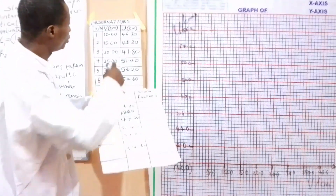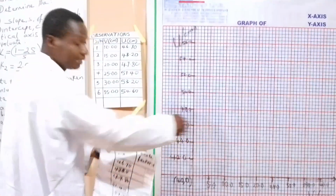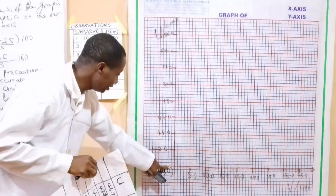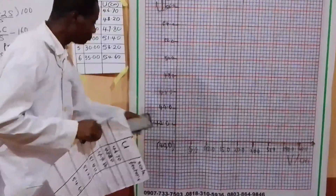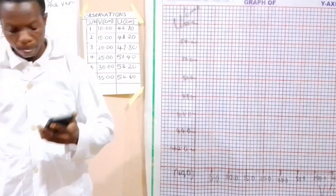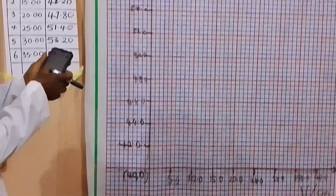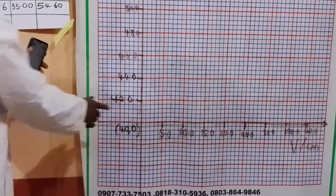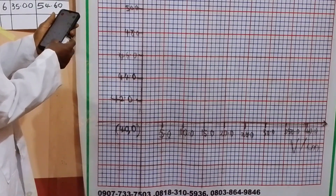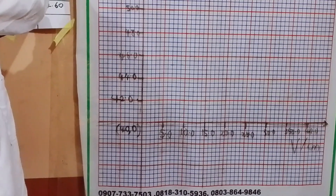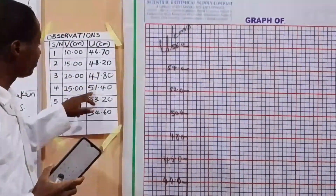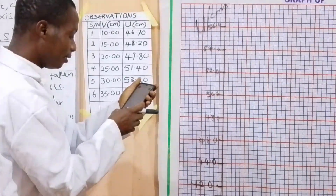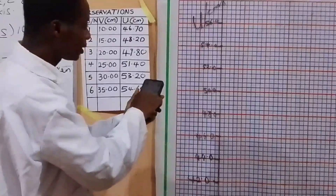From 40 to 42 it is 2 units, and we have 5 boxes. So use 5 to divide 2: 2 divided by 5 is 0.4. So each small box represents 0.4. We are going to use 0.4 to divide each of our values. Notice that we start from 40, so we already subtract 40 from each figure. So 6.7 divided by 0.4 is 17 boxes. So you count 17 boxes from the origin and plot the first point at V = 10.